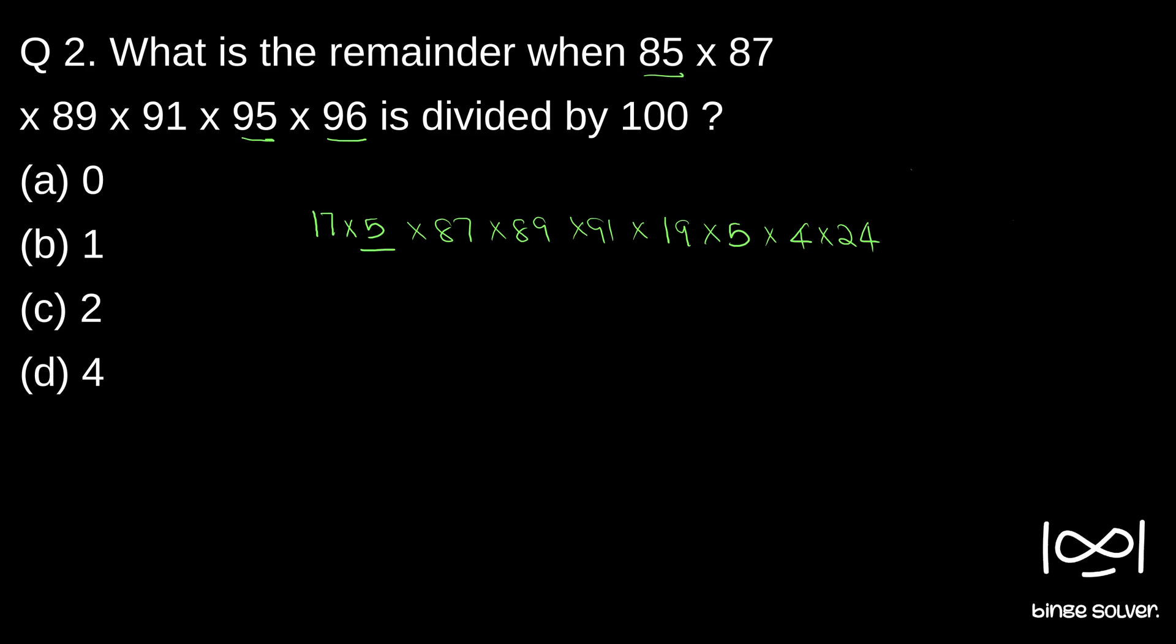Now as you can see, we have a 5 here, we have a 5 here, and we have a 4 here. Product of 5 × 5 × 4 is what?